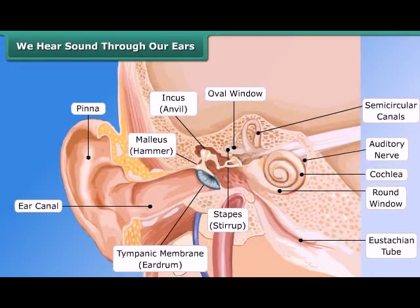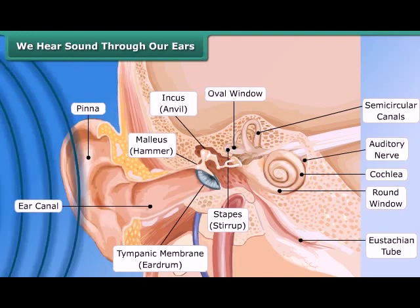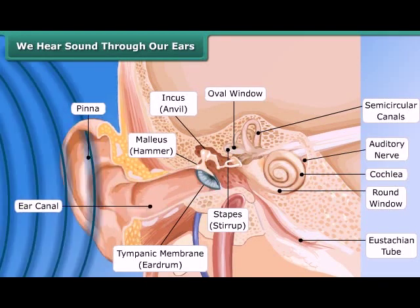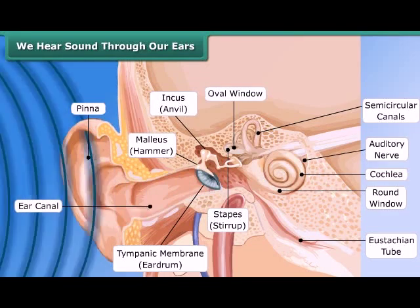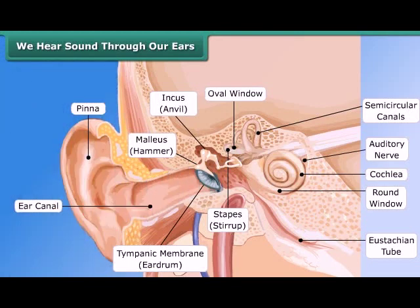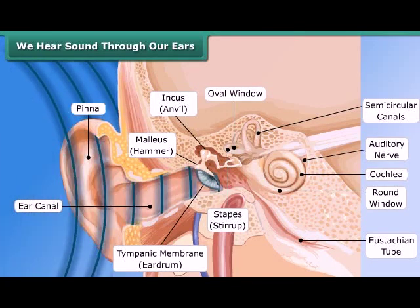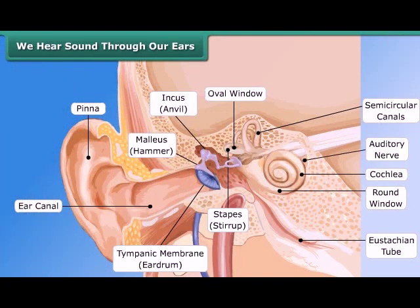We hear sound through our ears. The shape of the outer part of the ear is like a funnel. Sound enters and travels down a canal, at the end of which a thin membrane is stretched tightly, called the eardrum. Sound vibrations make the eardrum vibrate, and the eardrum sends vibrations to the inner ear, and through the inner ear, it goes to the brain. This is how we hear sound.